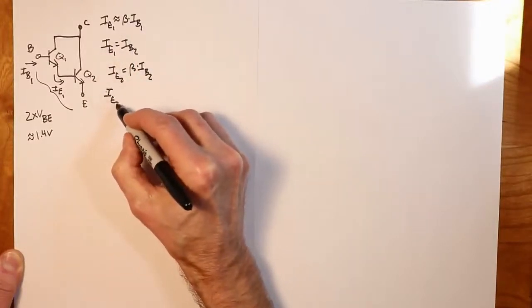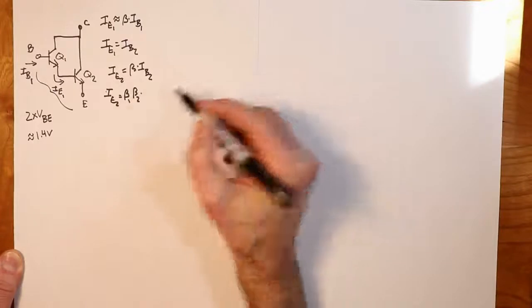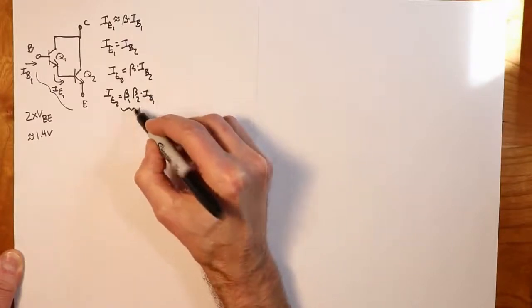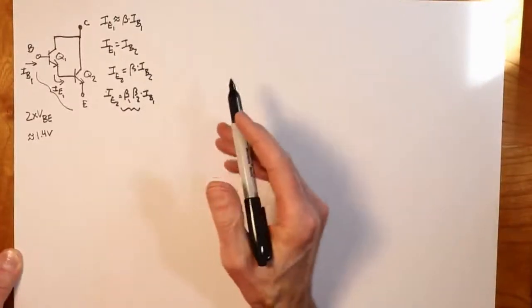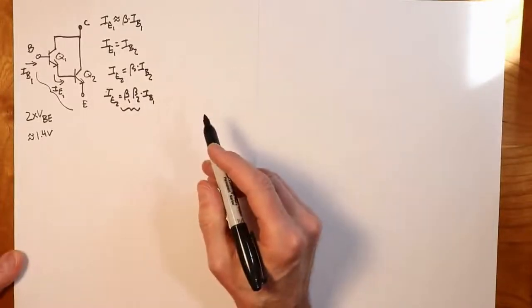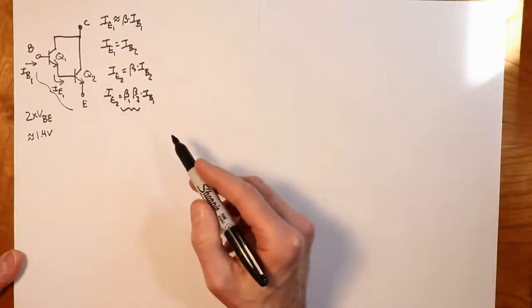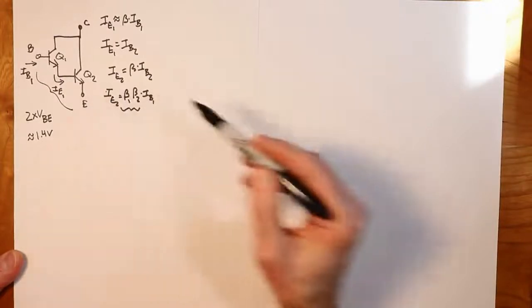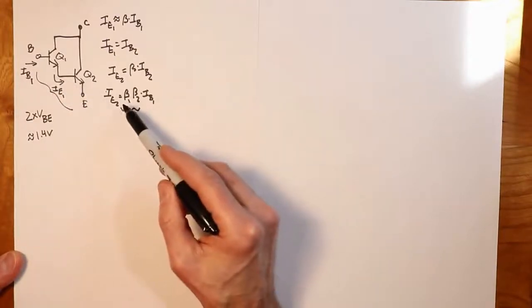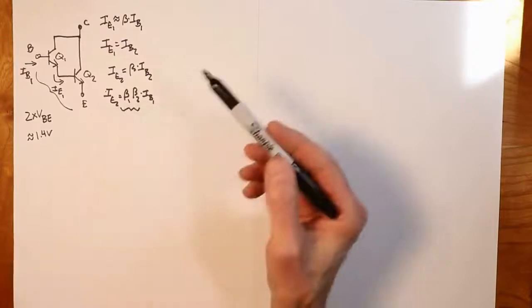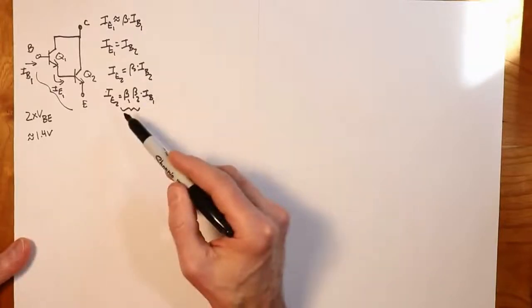So the emitter current coming out of the second transistor would be the first beta times the second beta times the input current IB1. We get this beta multiplying effect. If the two betas were identical, an easy way to remember this is that you're basically squaring beta. So we get a huge increase in the effective beta. It's unlikely that the two betas would be identical, but both transistors would see fairly large betas, so the composite would produce a beta in the thousands—we might get 5,000 or 10,000 for the effective beta.